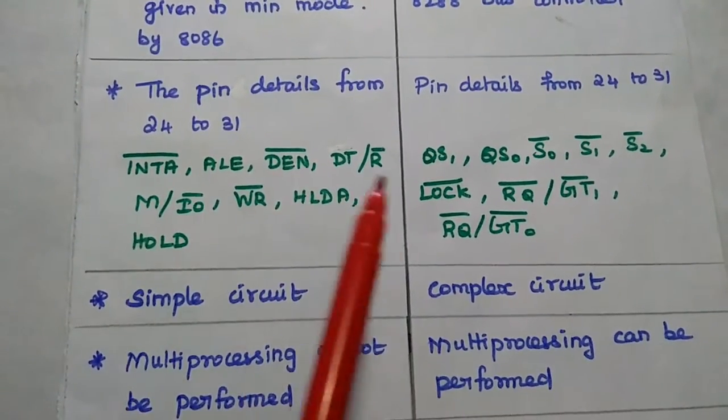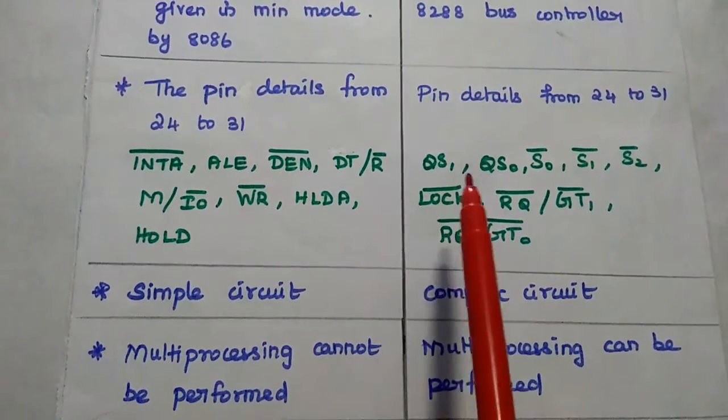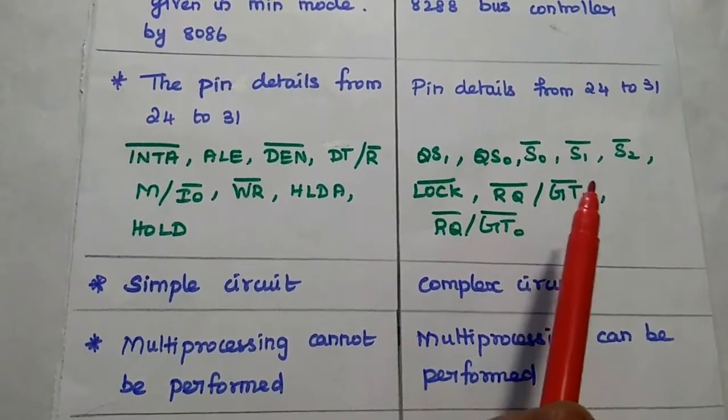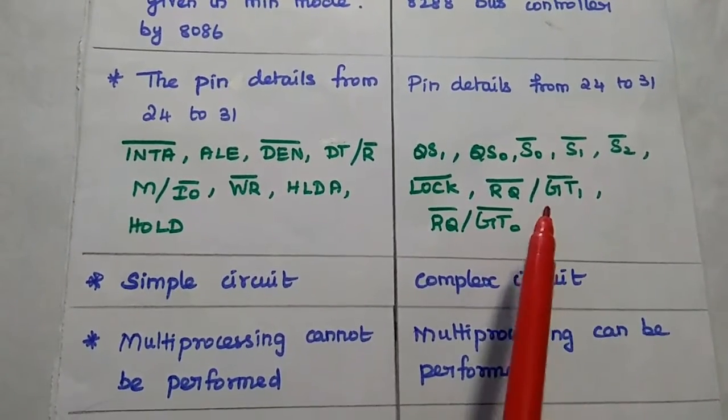But in maximum mode, the 8 signals are QS1, QS0, S0 bar, S1 bar, S2 bar, lock bar, and request or grant signals.